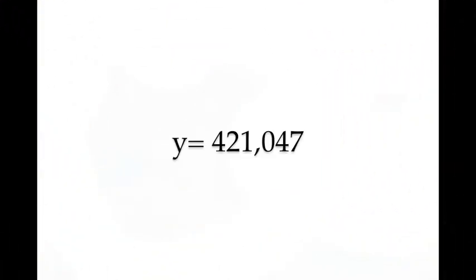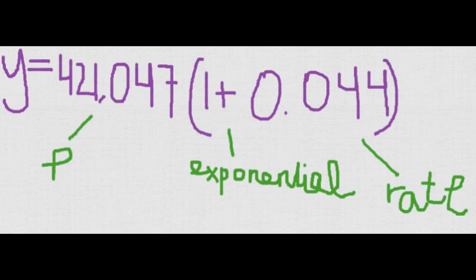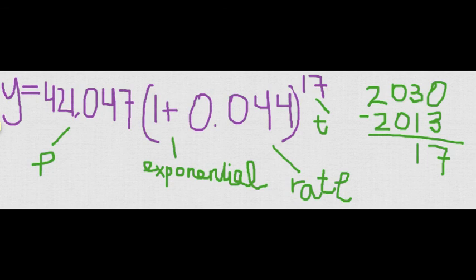We have y equals 421,047, which is the initial population of Williamson County. We multiply the amount times 1 plus, since it's an exponential growth problem, 0.044, which is the rate converted to a decimal. We then put this to the 17th power because there are 17 years between 2030 and 2013.